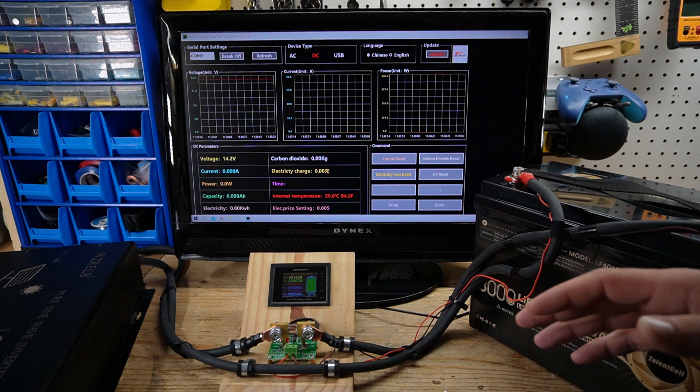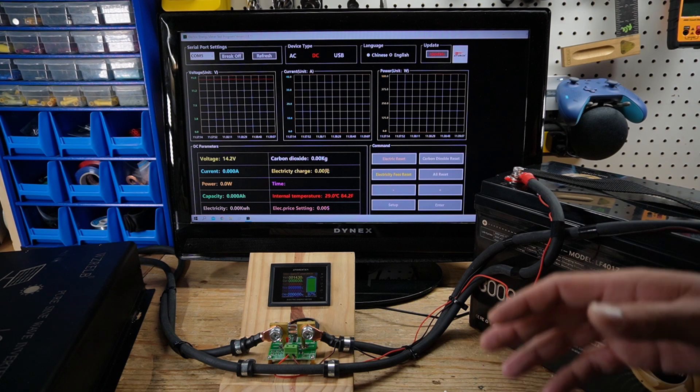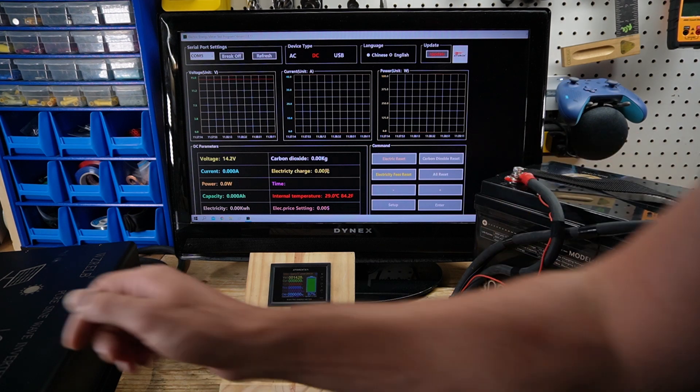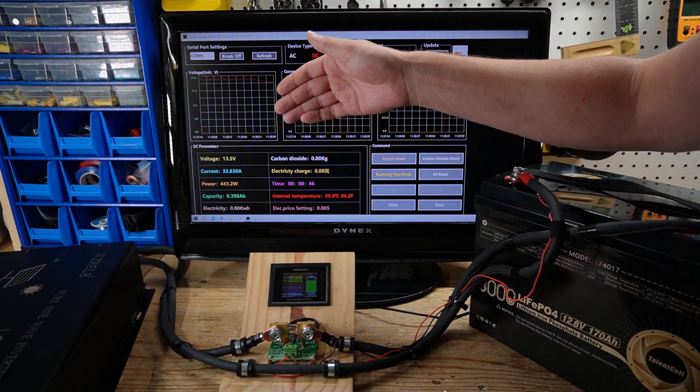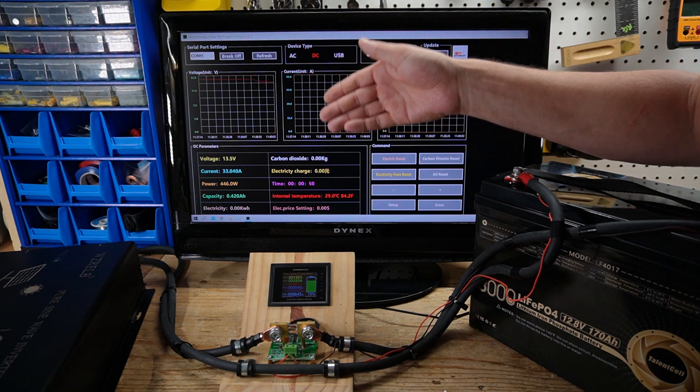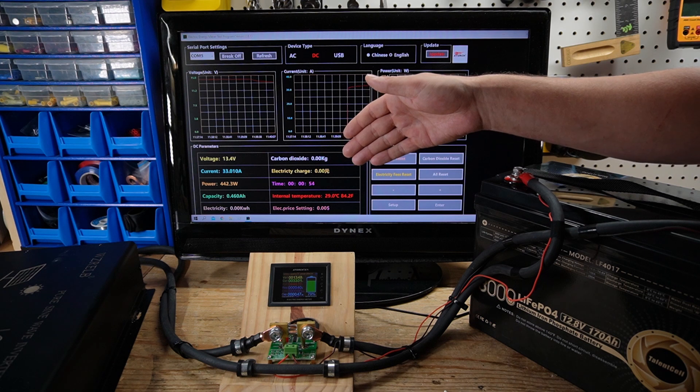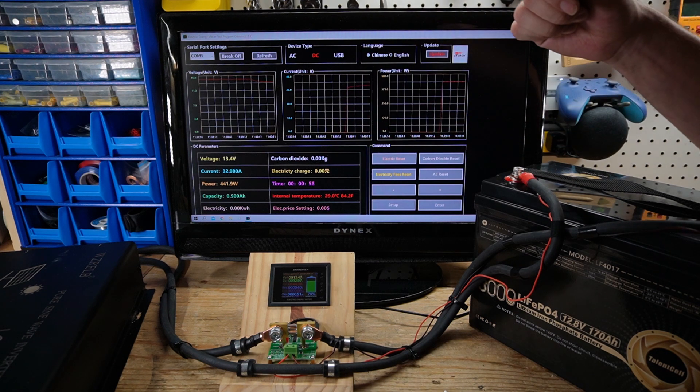I want to try and discharge around 435.2 watts in order to do a proper 0.2C discharge rate. So now we are discharging at 443 watts, which is as close as I can get it to a 0.2C discharge rate. I will let this test run. It should take about just under five hours, and we will be back with the results.